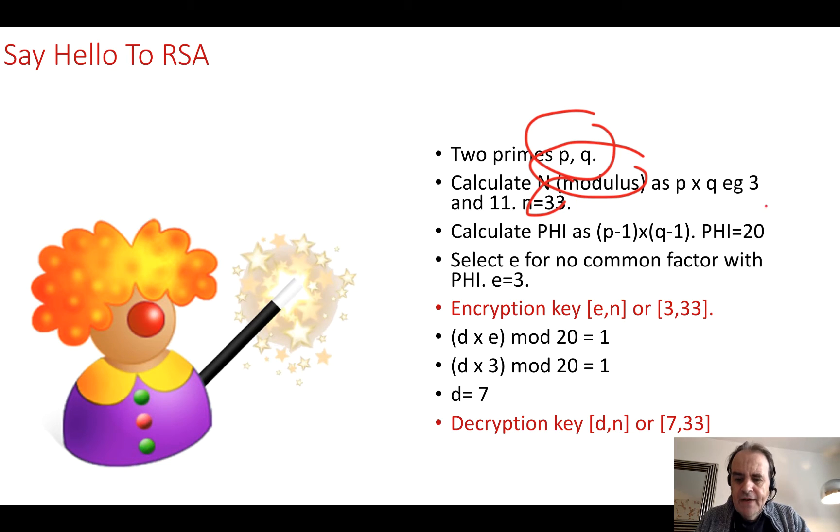We calculate phi. Phi is P minus 1 and Q minus 1. In this case it's 2 times 10 which gives us 20. Then we determine the value of the public exponent E to not have any shared factors with phi. That's the greatest common denominator between the two is 1. So that's our encryption key.